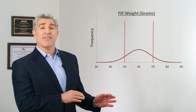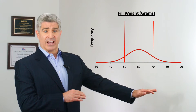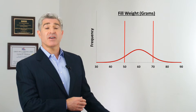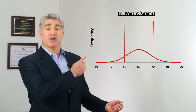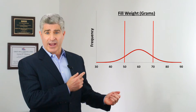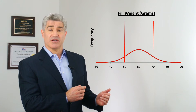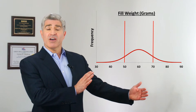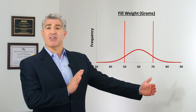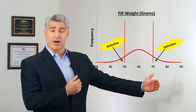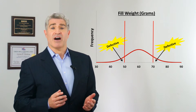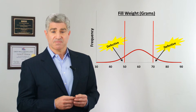Let's look at the data. On the horizontal axis we have our fill weight, targeted at 60. On the vertical axis, the y-axis, we have frequency. Look at all these that are below 50 or above 70 — they're defective, they're out of spec. They are defects.